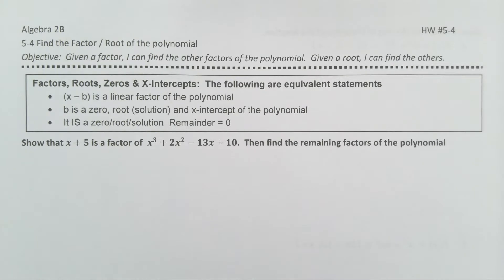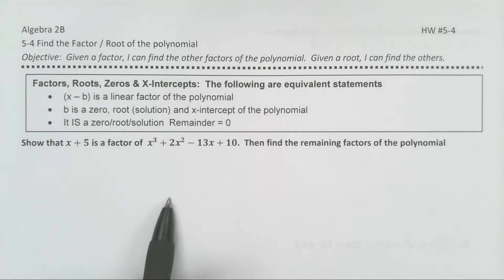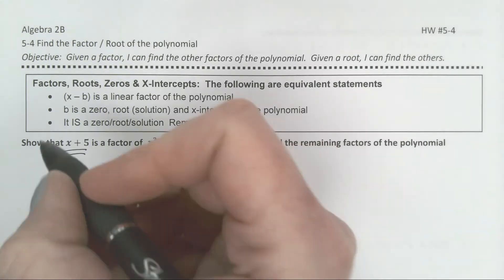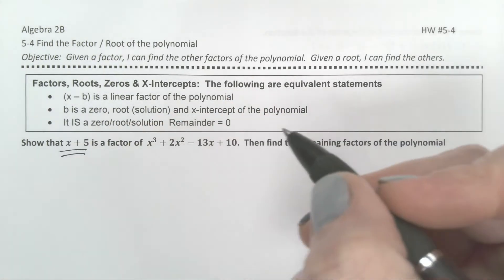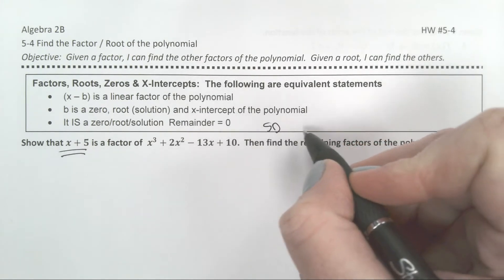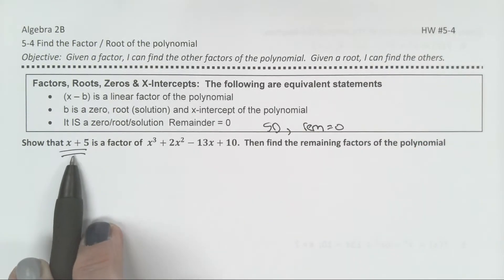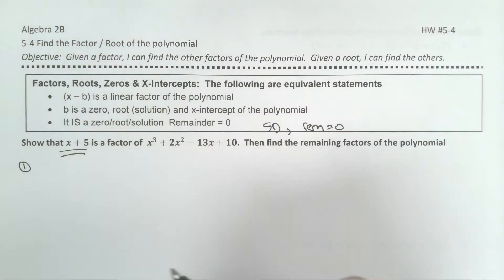Hi, Algebra 2. We're going to take what we've been doing about factors of a polynomial, and we are going to use that information to find all the factors of a polynomial. It says show that x plus 5 is a factor. So if we're going to show that, that means that if we run synthetic division, then my remainder will be 0. So I'm going to use synthetic division, and I'm expecting to get a remainder of 0.